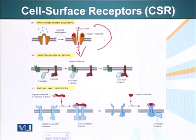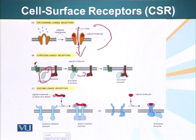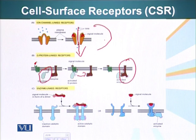G protein-linked receptors bind their ligand and go through a conformational change — the structure changes. In the cytoplasm, attached to the inner part of the plasma membrane, is a special protein called G protein. When these receptors are activated, G proteins bind them, become activated, and diffuse along the plasma membrane to find an effector molecule that will cause an effect.